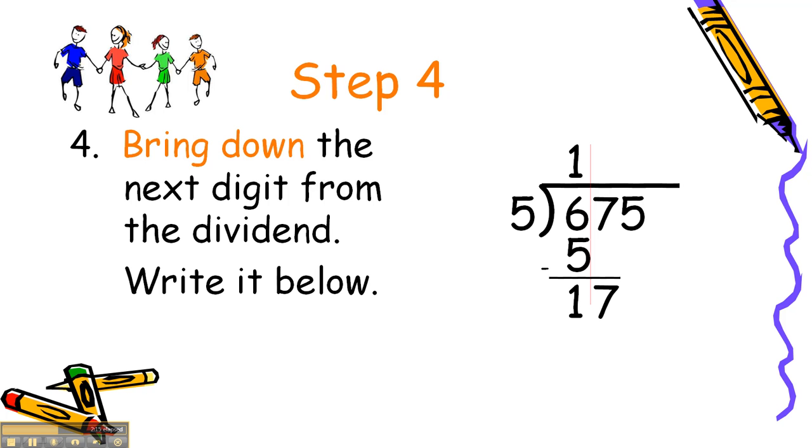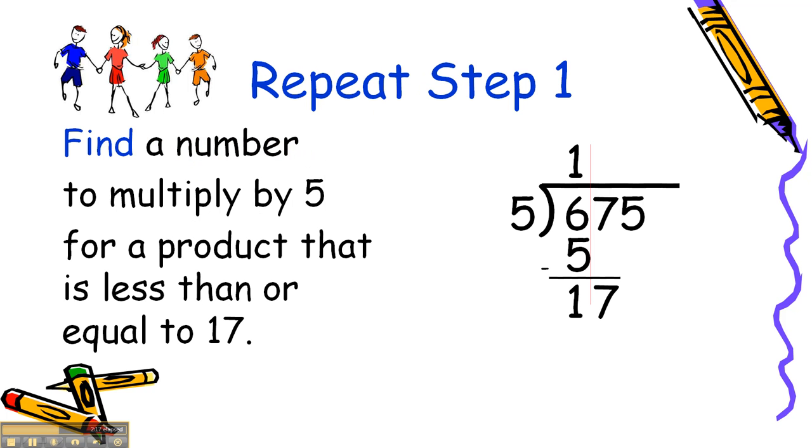Back to father. So we repeat the first step. Find a number to multiply by 5. This time for a product that is less than or equal to 17. Well, what number times 5 will give us a number close to 17?